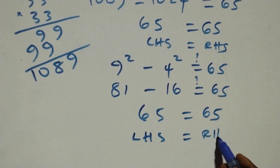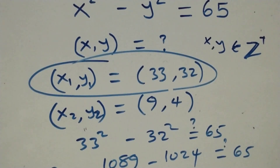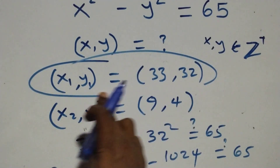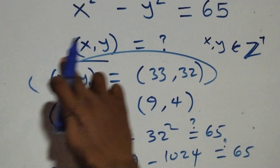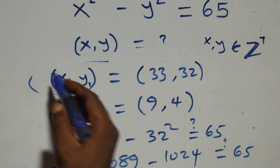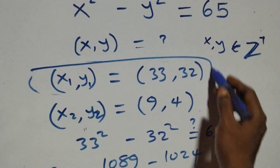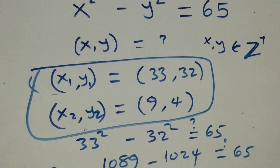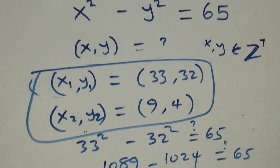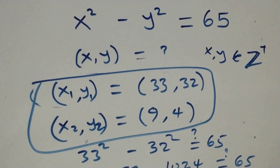We conclude that these two sets of solutions — (33, 32) and (9, 4) — are members of positive integers satisfying the given problem. Thank you for watching; subscribe for more videos, turn on the notification bell, share, and give a thumbs up.